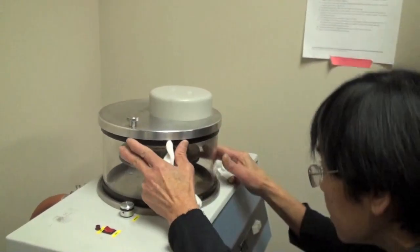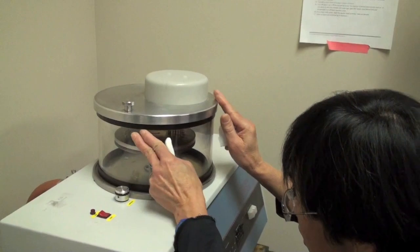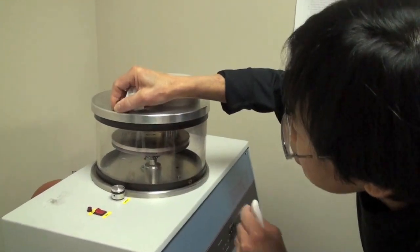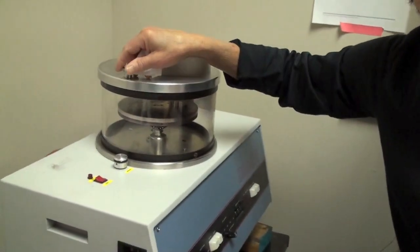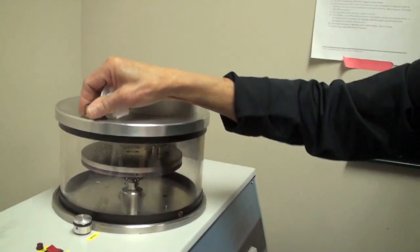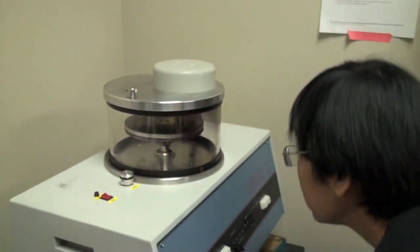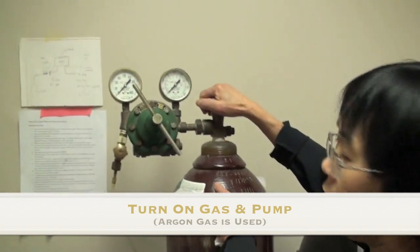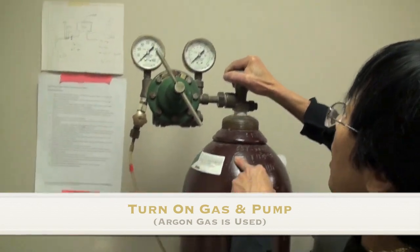When you close it, make sure that it's underneath, because sometimes when they close it, it goes like this. You're not going to get the vacuum, because you have to make sure that it's fall down. So you turn on the oven. Argon gas.